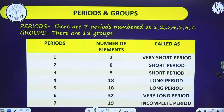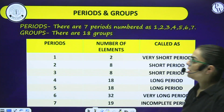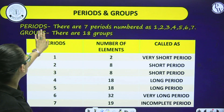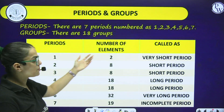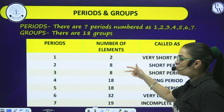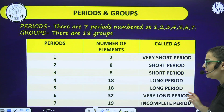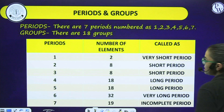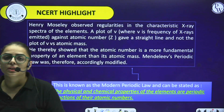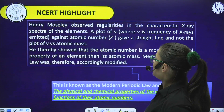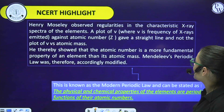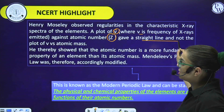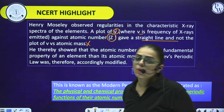There are 7 periods and 18 groups. Period 1 is very short (2 elements); Periods 2 and 3 are short (8 elements each); Periods 4 and 5 are long (18 elements each); Period 6 is very long (32 elements); Period 7 is incomplete (19 elements). Now let us start the trick to learn the periodic table. Group 1 (S-block) contains: Hydrogen (H), Lithium (Li), Sodium (Na), Potassium (K), Rubidium (Rb), Caesium (Cs), Francium (Fr). Note that Sodium is Na (not S), and Potassium is K.